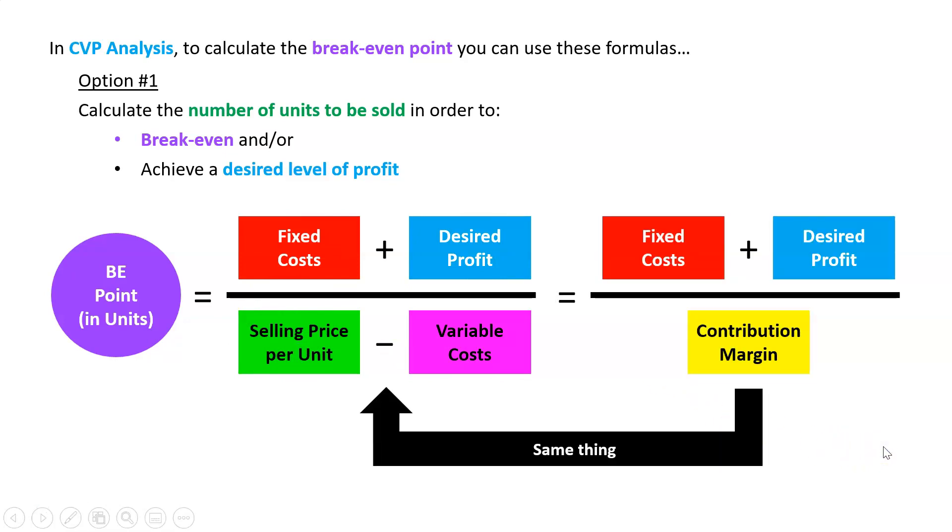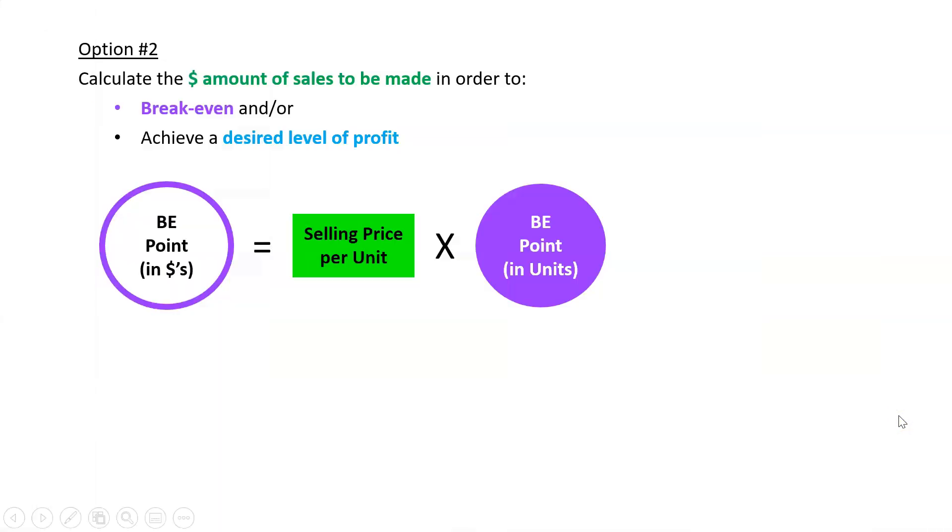If you've got either of those figures, you can actually just substitute contribution margin in directly, or you can do it the long way and do the selling price minus the variable costs.